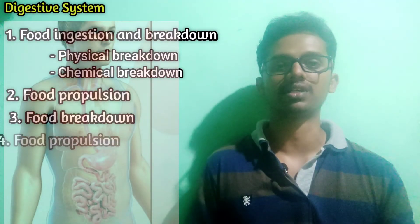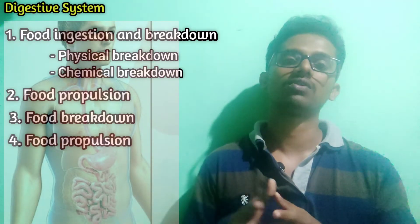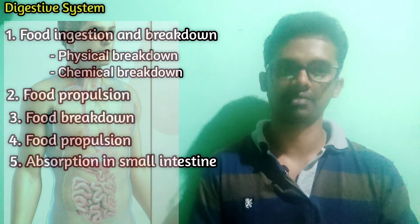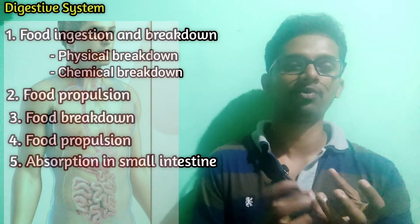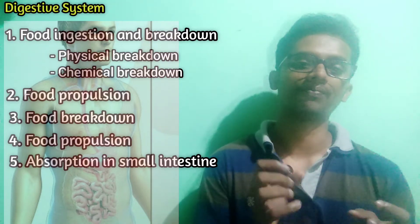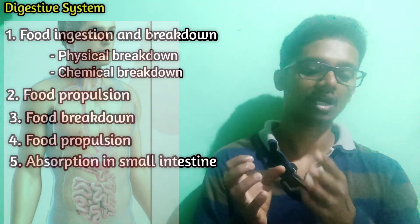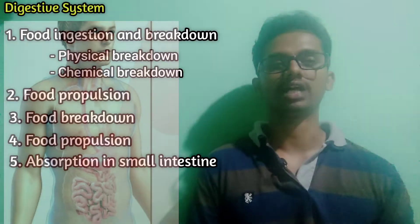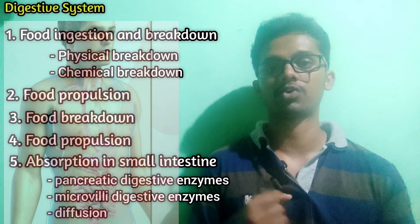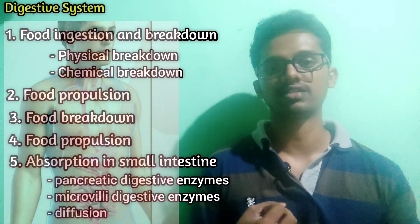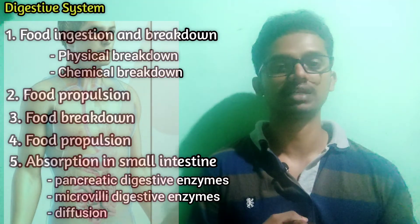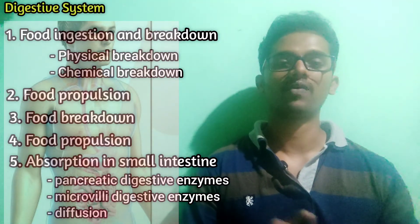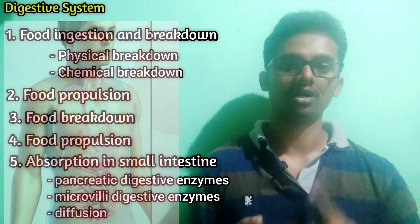The fourth step is again food propulsion — after breakdown in the stomach, the food moves into the small intestine. The fifth step is food propulsion and absorption in the small intestine. As food moves through the small intestine, it is absorbed. Pancreatic enzymes are critical during absorption, and many digestive enzymes in the microvilli facilitate absorption through diffusion and other processes.